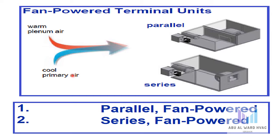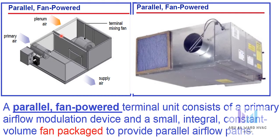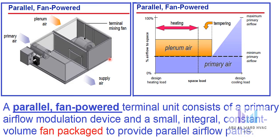Another method that a single duct VAV terminal unit can employ to heat a space is to mix warm plenum air with cool primary air. Because this method uses a small fan to draw warm air from the plenum and mix it with the primary air, they are called fan powered terminal units. They come in two configurations: parallel and series. A parallel fan powered terminal unit consists of a primary airflow modulation device and a small integral constant volume fan packaged to provide parallel airflow paths. In the cooling mode, the unit is controlled in the same manner as the cooling only unit — primary airflow is reduced as the cooling load in the space decreases.